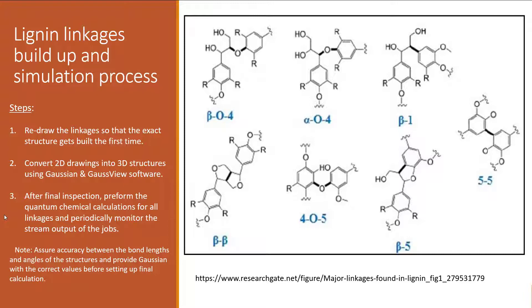These were the steps I took when building the structures. First, I redrew the seven linkages on paper. This was very helpful because it assisted me in converting a 2D structure into a 3D structure on Gaussian. It also helps with accuracy and building your structure right the first time. After you finish building your 3D structure model on Gaussian, it is important to inspect your structure and make sure that the bond lengths and bond angles are accurate.